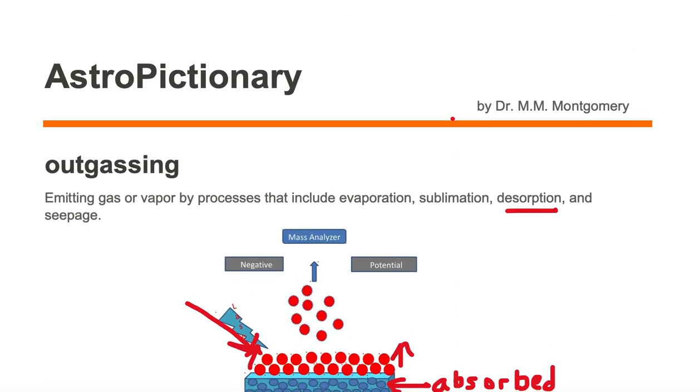Other ways to outgas from a surface include evaporation, sublimation, and seepage among others.